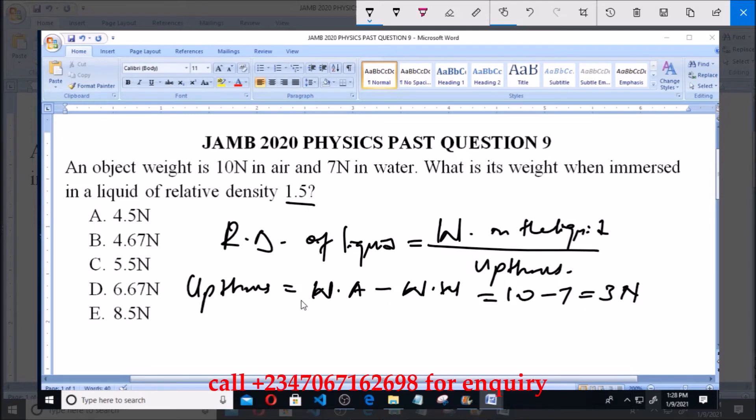Then we can now say that the relative density of the liquid, which is 1.5, is equal to the weight of the object in the liquid, which is what we are looking for. Let's call it W, all over the upthrust, which is equal to 3.